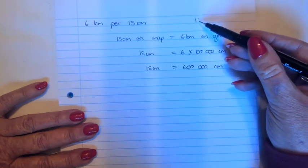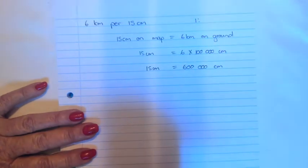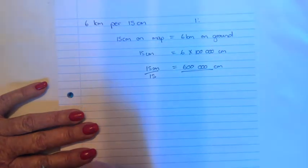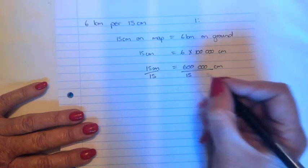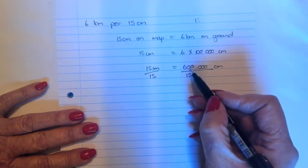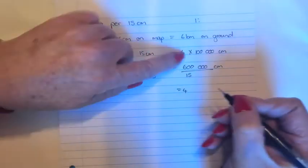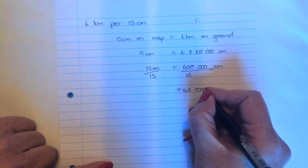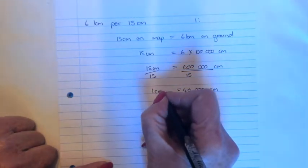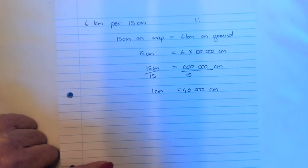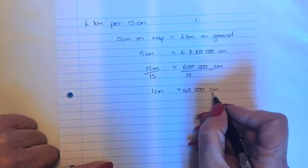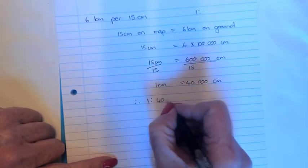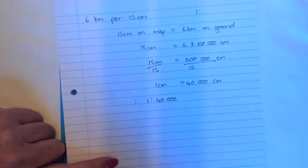So you will get 15 centimeters equals 600,000 centimeters. Only now you will go and convert the 15 centimeters into one. And how you do it is dividing by 15. What you do on the left hand side, you do on the right hand side. 15 can't go into six. 15 goes into 64 times. And you are left with one, two, three, four zeros. So now you can say one centimeter equals 40,000 centimeters. But please note, this is not a ratio scale. So your last step would be one, two, forty thousand. And that will be your answer.